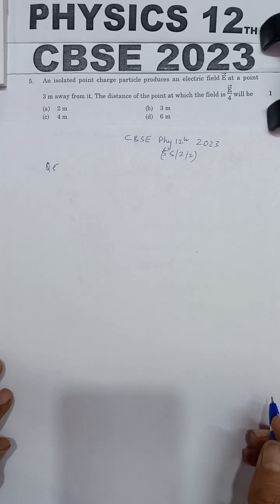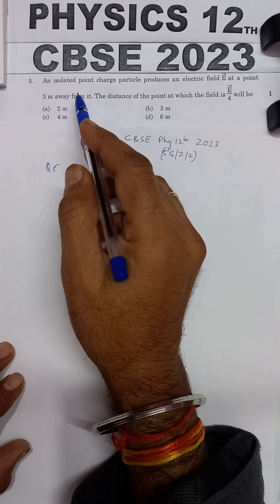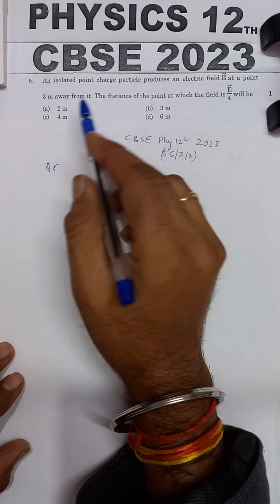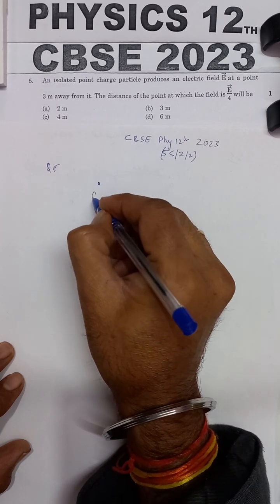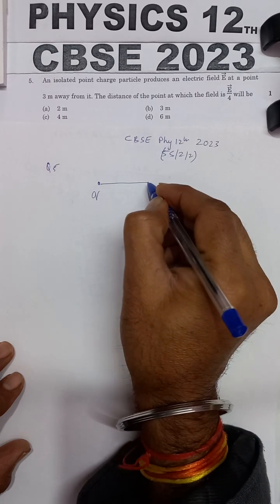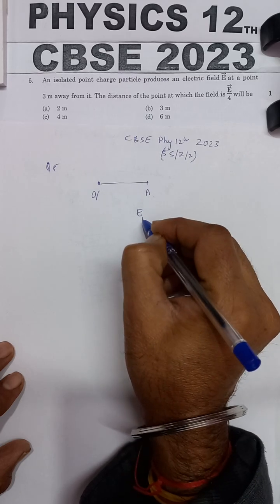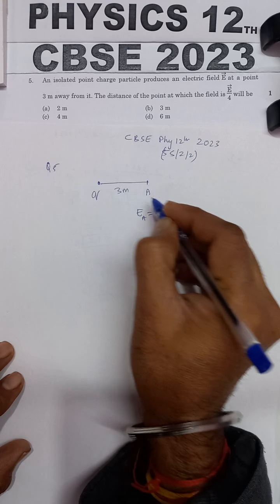This question is from CBSE Physics 12th 2023 board examination. The problem states an isolated point charge particle produces an electric field E at a point 3 meters away from it. So here you have a point charge Q, and this is producing an electric field of value E at a distance of 3 meters.